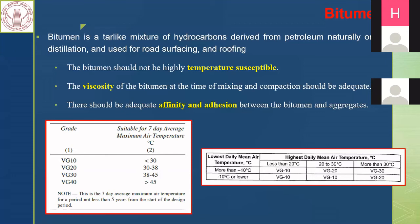If bitumen is very highly temperature susceptible, at higher temperatures it becomes very soft, leading to rutting under traffic load. At lower temperatures it becomes very hard and brittle, leading to cracking under load. Both scenarios cause pavement distress — rutting problems, fatigue problems, and low temperature cracking. So we don't want our bitumen to have very high temperature susceptibility.